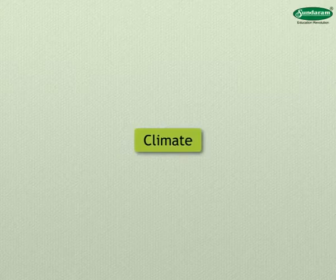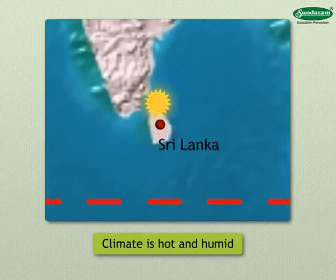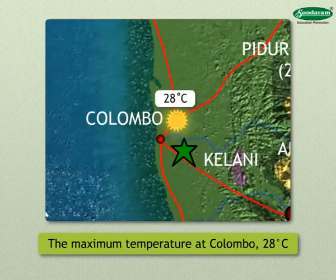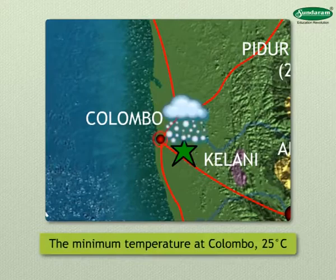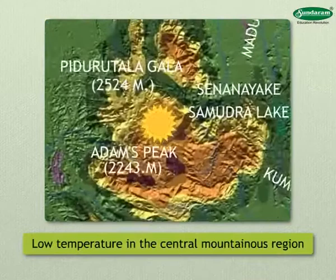As Sri Lanka is very close to the equator, the climate is hot and humid. There is little variation in the annual temperature. For example, the maximum temperature at Colombo is 28 degrees Celsius in summer, whereas the minimum temperature in winter is 25 degrees Celsius. The temperature in the central mountainous region is low because of the high altitude.